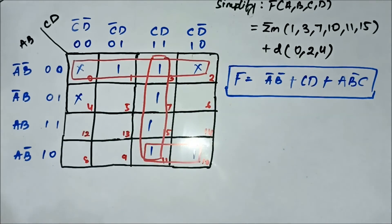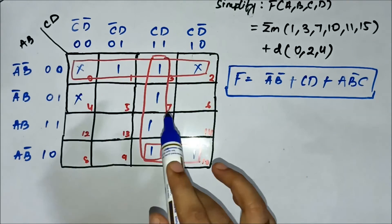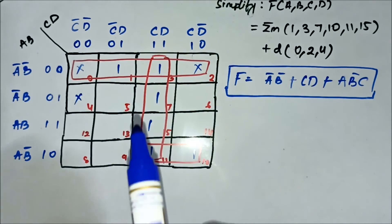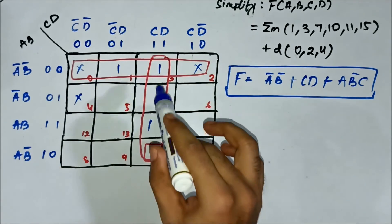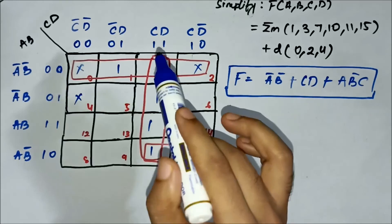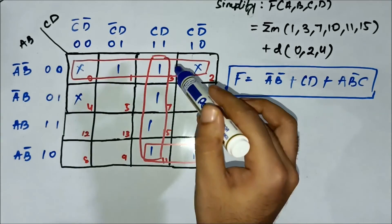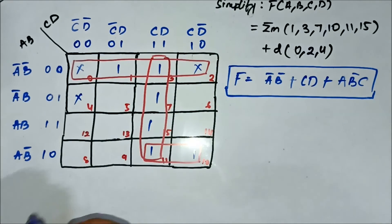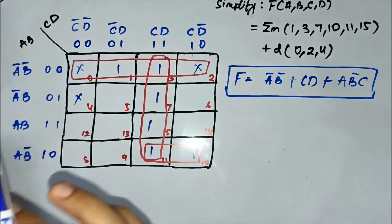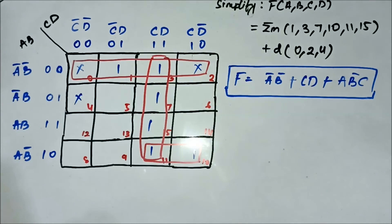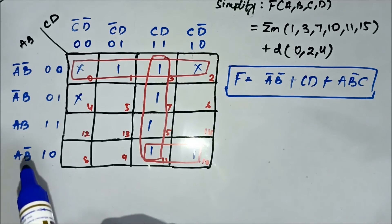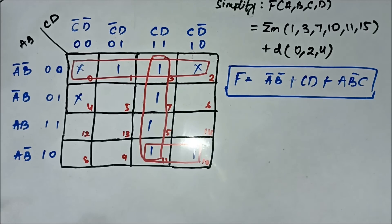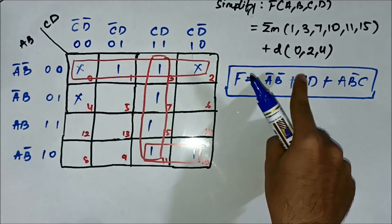Always remember that whenever you have to form groups in don't-care conditions for SOP K-maps, the first priority should be to cover all the cells marked as 1. The X-marked cells can be used to help form groups to cover all the 1-marked cells. But if any X-marked cell is left behind, there is no need to form an extra group for it — simply leave it behind. This is the simplified Boolean expression.